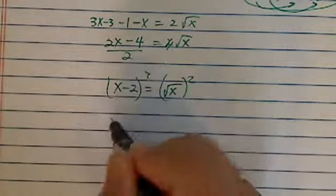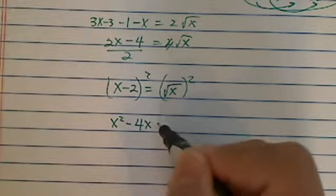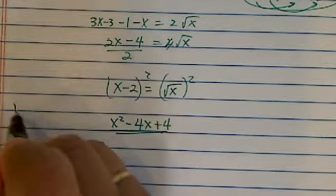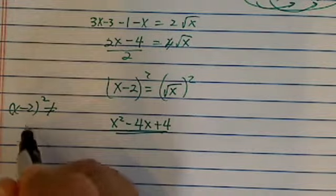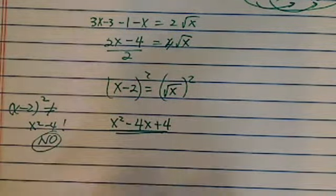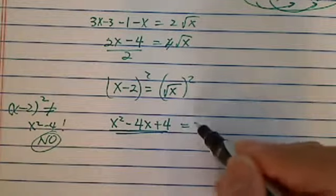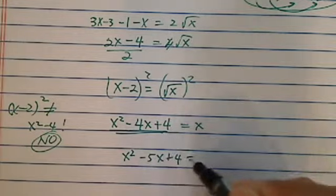It's pretty simple. x squared, remember again, it's x minus 4x plus 4. This is important. Once again, x minus 2 squared does not equal to x squared minus 4. No, do not do this on the test. This one is equal to x. I'm going to move it over. x squared minus 5x plus 4 equal to 0.